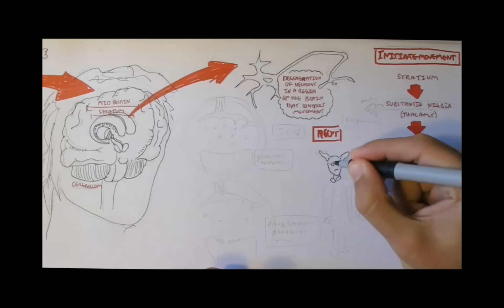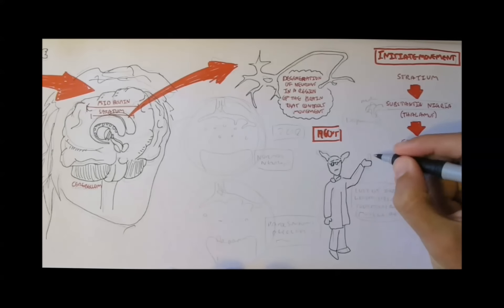In the early 1960s, scientists identified the primary problem underlying Parkinson's disease: the loss of brain cells that produce a neurotransmitter called dopamine.